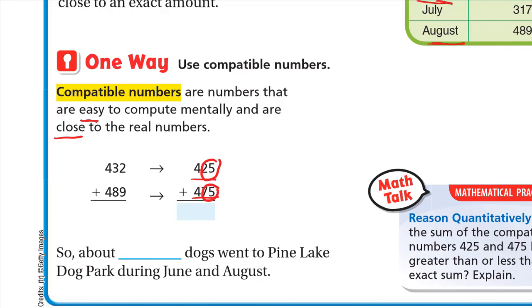So 432, he used 425, and 489 he used 475. That's because 25 and 75 are easier to deal with. 25 plus 75 is 100, so when we're adding, 25 plus 75 is 100, I write two zeros and carry up 1. 1 plus 4 is 5 plus 4 is 9. So about 900 dogs went to Pine Lake Dog Park during June and August.